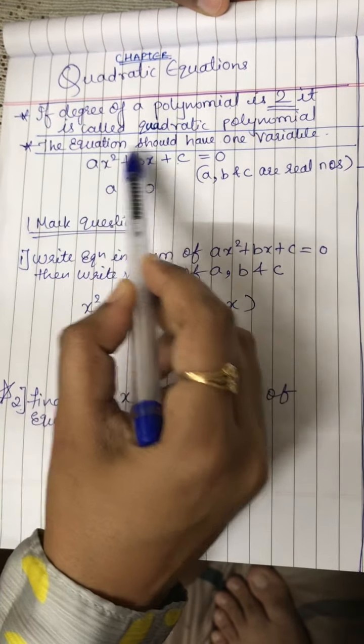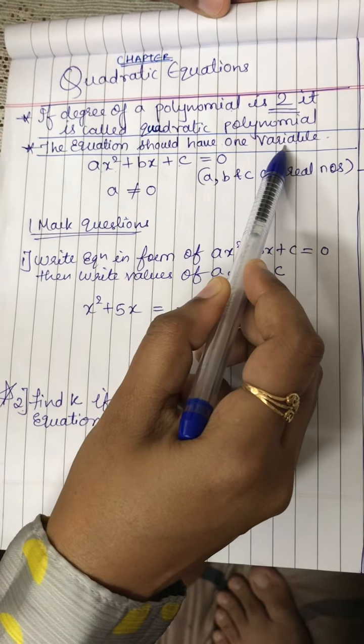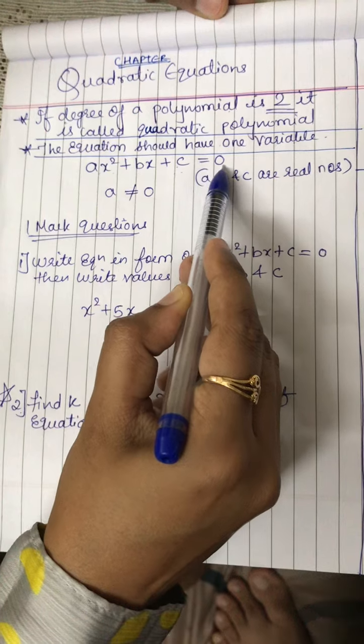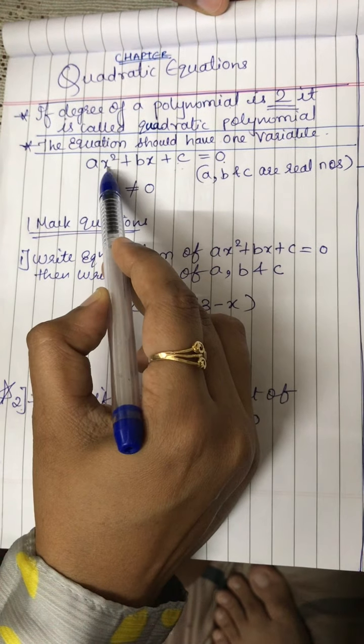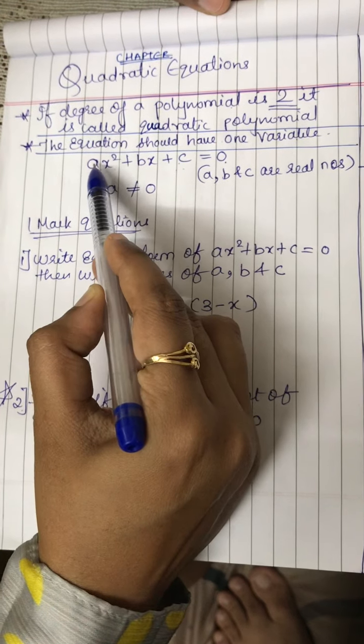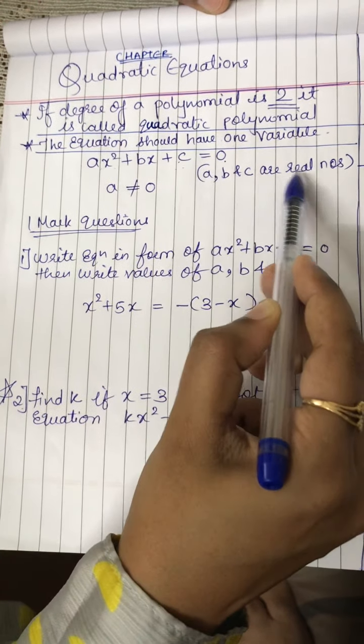And second, the equation should have only one variable. Here the equation is ax square plus bx plus c is equal to 0. The variable is x, x square x. And the coefficients a, b, c are real numbers.